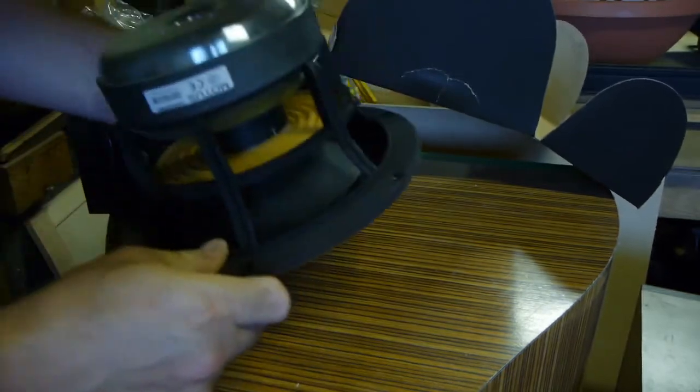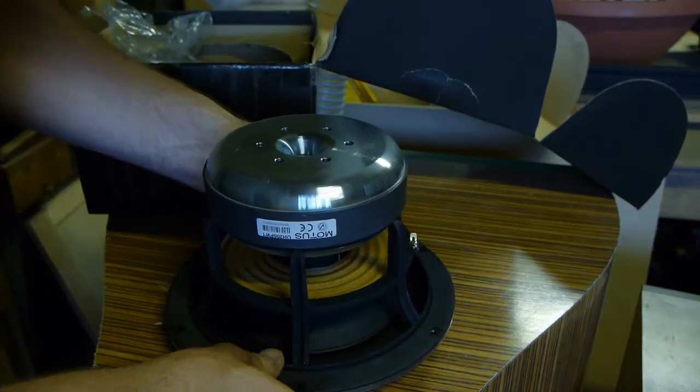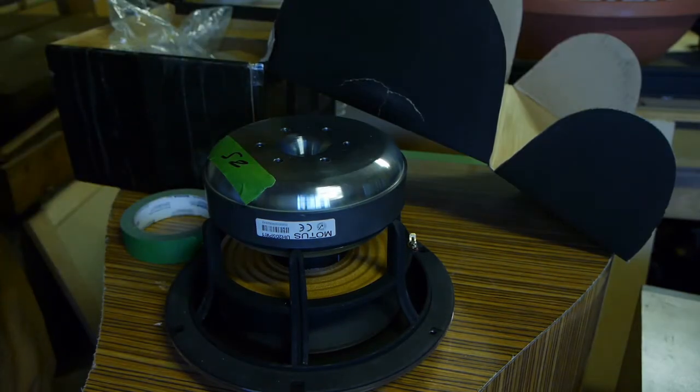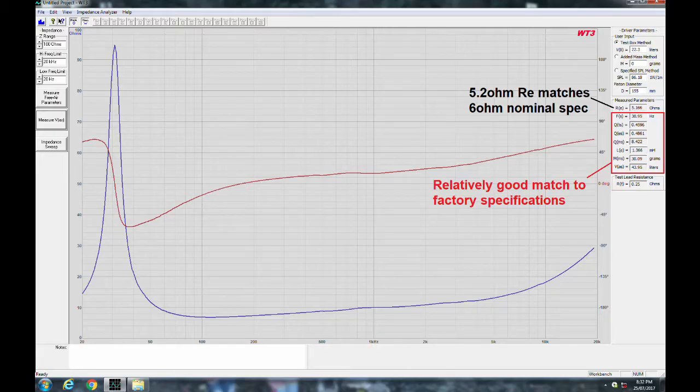These plastic covers are so hard they actually support the woofer without touching the surround. Sample 2 here we go. So I did the same thing. I did free air and then in the box, this chart just shows the TS parameters again. The DC resistance matches a 6 ohm spec and we have a pretty good match to the Audio Express results as well as the factory specs. And in general these TS parameters look very good.